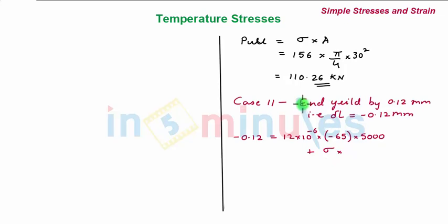Plus sigma, the stress which you have to find out in the second case induced in the steel rod. Length is 5000 upon 2 times 10 to the power 5. The stress in this case comes out to be 151.2 Newton per mm square.